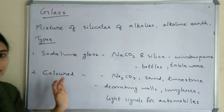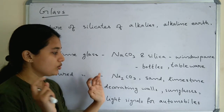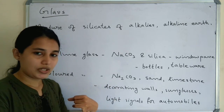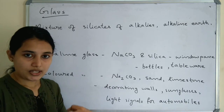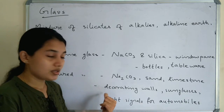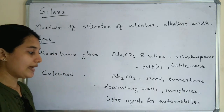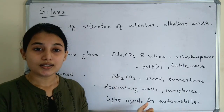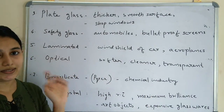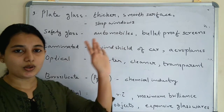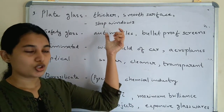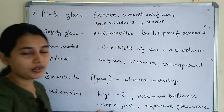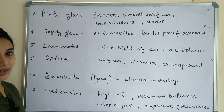The second type is coloured glass, made from sodium carbonate, sand, and limestone (calcium carbonate). It is used for decorating bowls, sunglasses, and light signals for vehicles. The third type is plate glass, which is thicker than ordinary glass and has a smooth surface. It is used for shop windows and doors.